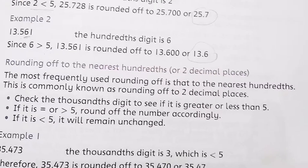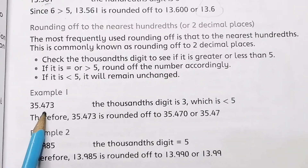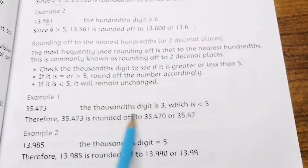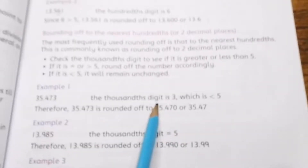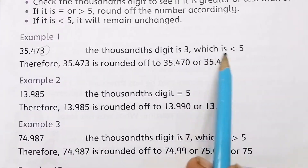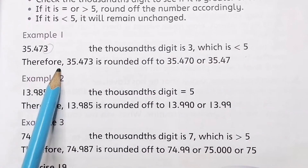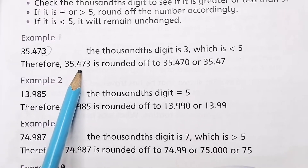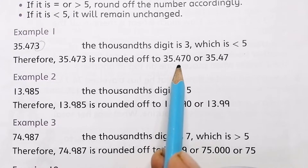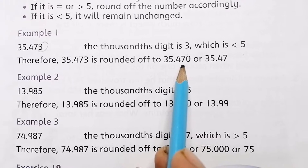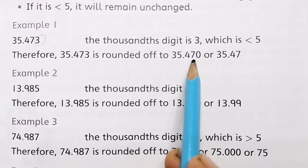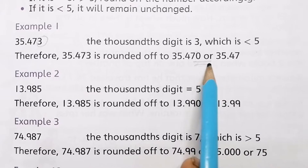One more example: 35.475 is given. The digit at the thousandth place is 5. Since 5 is equal to or greater than 5, you round up. Wait — looking at the hundredth place, the digit is 7, which remains. The answer rounded to the nearest tenth is 35.5. For the thousandth digit being less than five, there would be no change.